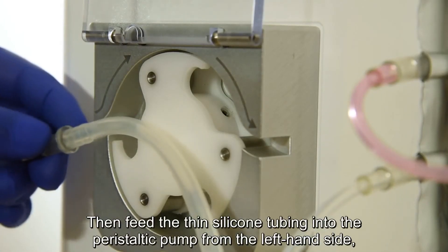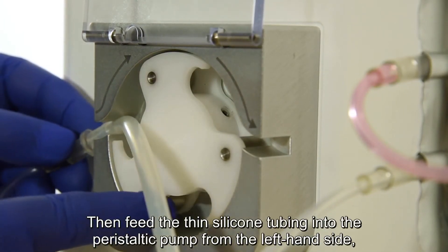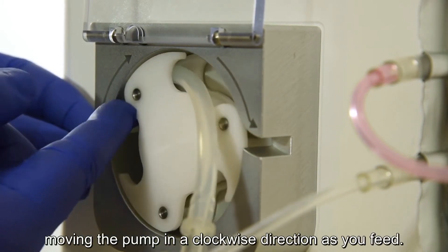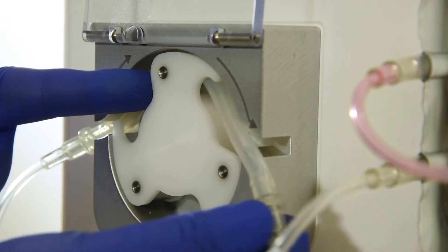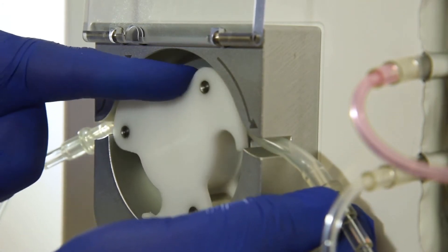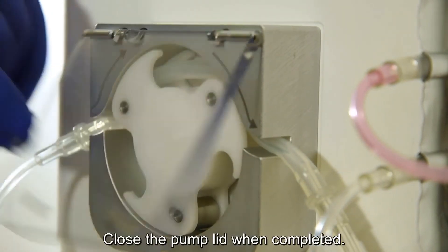Then, feed the thin silicon tubing into the peristaltic pump from the left-hand side, moving the pump in a clockwise direction as you feed. Close the pump lid when completed.